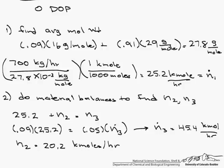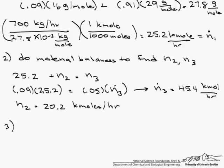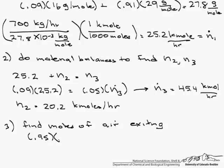So the next thing that our question asks is, how do we find the mole fractions coming out in the stream of both oxygen and nitrogen? So the first thing we have to do, because the oxygen and nitrogen are in the air, is we have to find the moles of air exiting. So that's just 0.95 times N3, which is 45.4 kilomoles per hour, and that's 43.1 kilomoles of air.